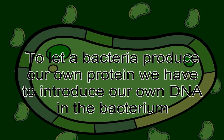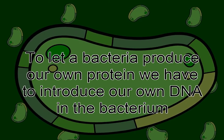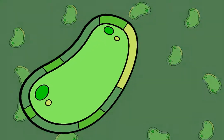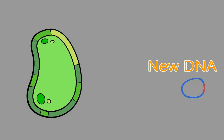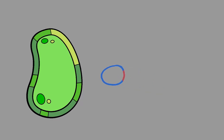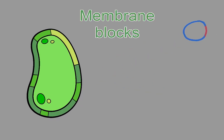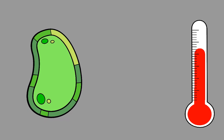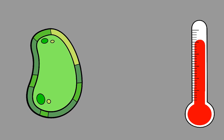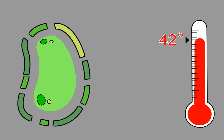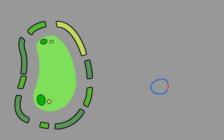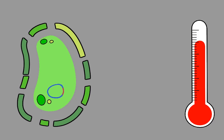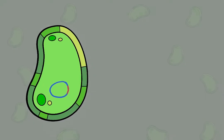To let a bacterium produce our own protein, we have to introduce our own DNA into the bacterium. If we introduce new DNA to the bacterium without alteration, the membrane around it will block the DNA. To prevent this from happening, we open this membrane by increasing the temperature to 42 degrees Celsius. The required temperature might differ when using other bacteria. After this, we lower the temperature again in order to close the membrane.